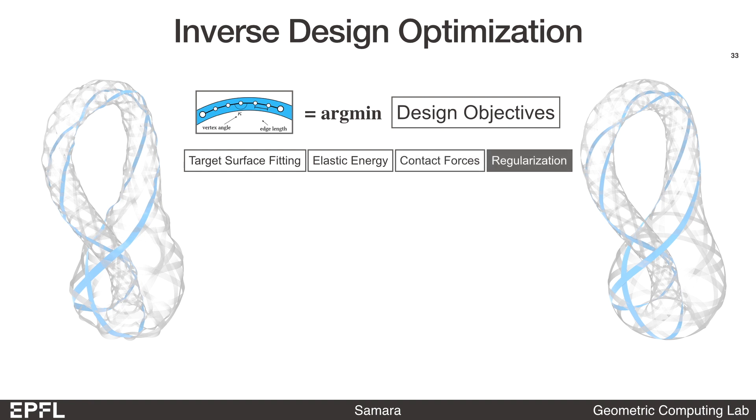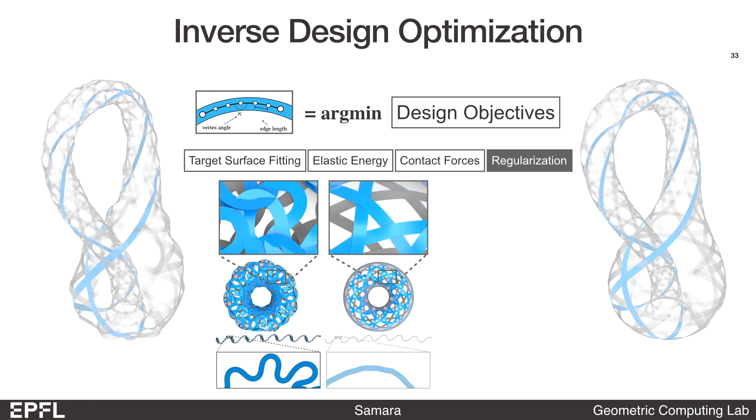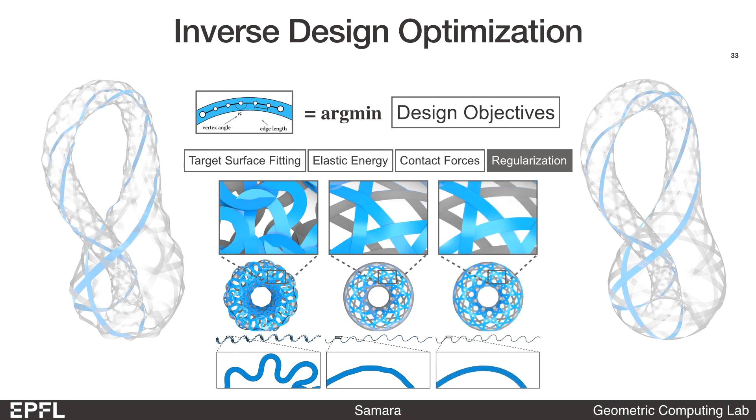We found through experiments that because both the length and curvature are free variables, if we do not apply any regularization, the ribbons will get longer and longer and have self-intersections. If we simply regularize the length of the ribbons, we get a reasonable result, but the ribbons tend to be piecewise linear and have kinks at the crossings. So we add another regularization term on the curvature to promote smooth ribbons. The weights of these terms give the user some design freedom.